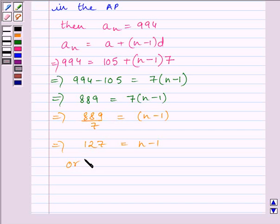We can write (n-1) is equal to 127. This implies n is equal to 127 plus 1, or n is equal to 128.